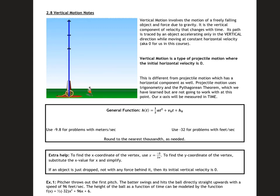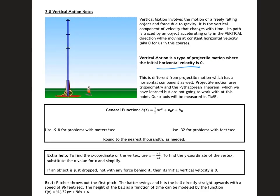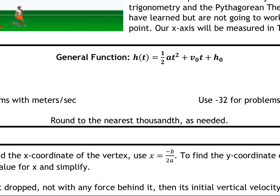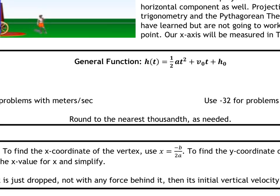We're going to take a look at vertical motion today. Vertical motion is a type of projectile motion where the initial horizontal velocity is zero. You can pause and read through the background if you need to. What we need to focus on is the general function: one-half a times t squared plus v-sub-zero times t plus h-sub-zero.